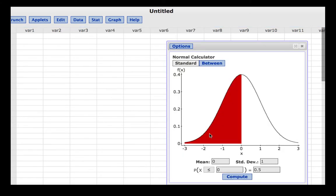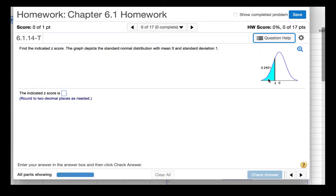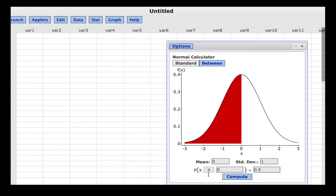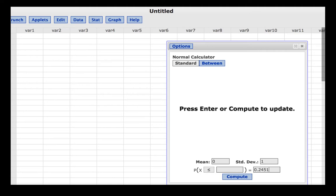When the calculator opens, the mean is set to 0 and the standard deviation is set to 1. The area in this case is to the left and it is 0.2451. So we will leave the inequality at less than and then in the area box type 0.2451.